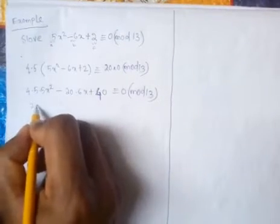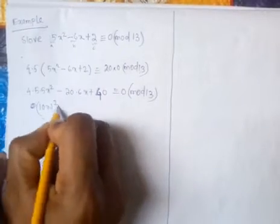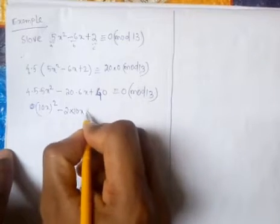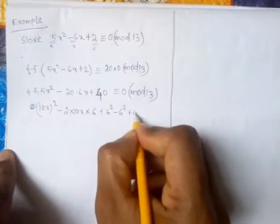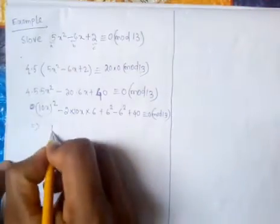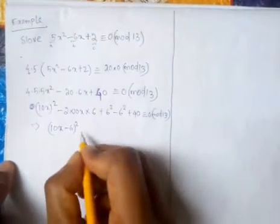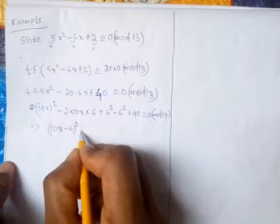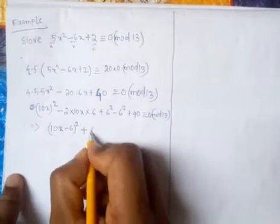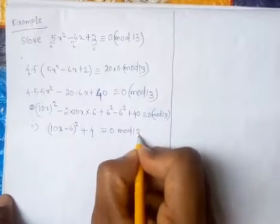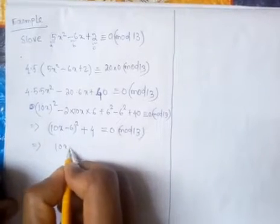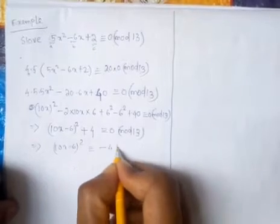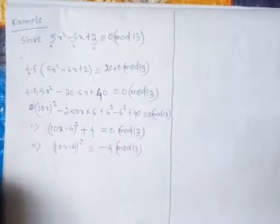Expanding, we get (10x)² - 2·(10x)·6 + 6² - 6² + 40 ≡ 0 mod 13, which simplifies to (10x - 6)² - 36 + 40 ≡ 0 mod 13. Since -36 + 40 = 4, we have (10x - 6)² + 4 ≡ 0 mod 13, so (10x - 6)² ≡ -4 mod 13.